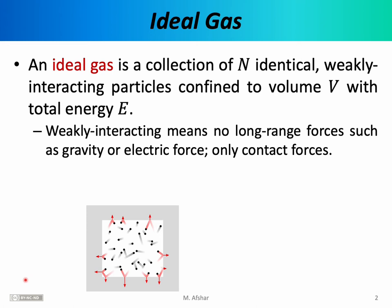In this lecture, we want to discuss the ideal gas. The ideal gas is a model for the realistic, interesting gases that we want to discuss in this class. The ideal gas model was the first and simplest model that successfully predicted the behavior of matter. More precisely, an ideal gas is a collection of N identical weakly interacting particles confined to volume V with total energy E. So the ideal gas is described by three parameters: the number of particles, the volume in which those particles live, and the total energy of those particles.